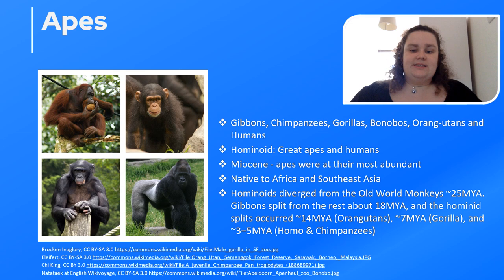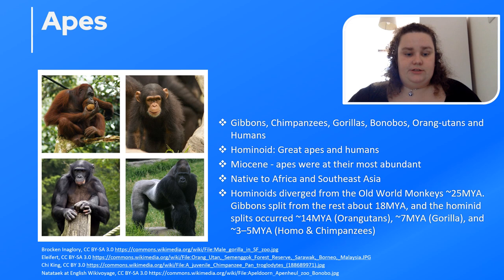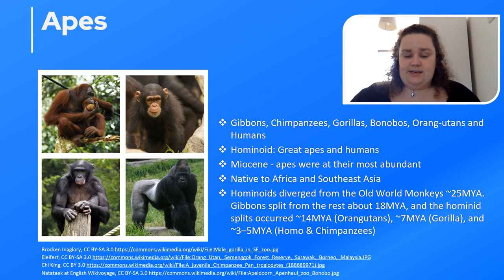Hominoids diverged from the old world monkeys roughly 25 million years ago. Gibbons, which are more basal, split from the rest at about 18 million years ago. The split between orangutans and the hominids occurred around 14 million years ago. Seven million years ago the gorillas split off, and then around 3 to 5 million years ago, Homo and chimpanzees diverged from each other.